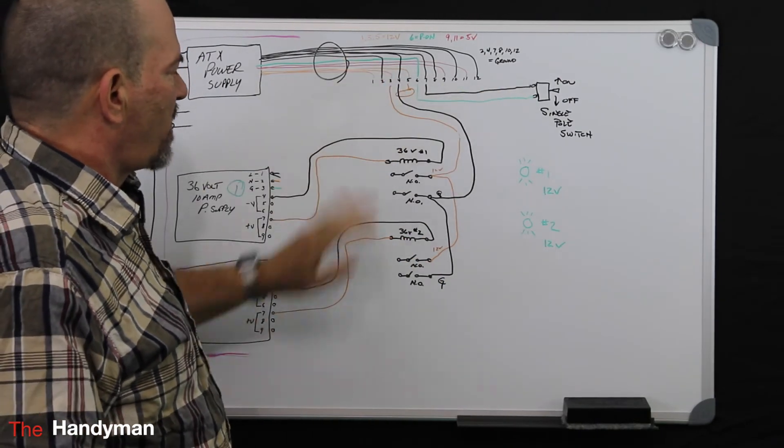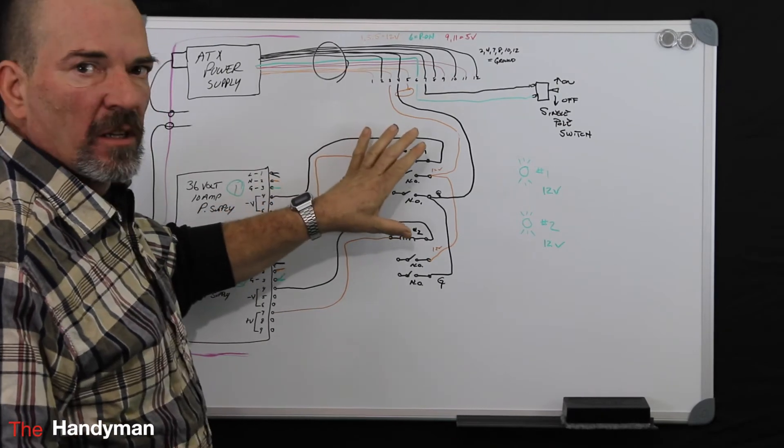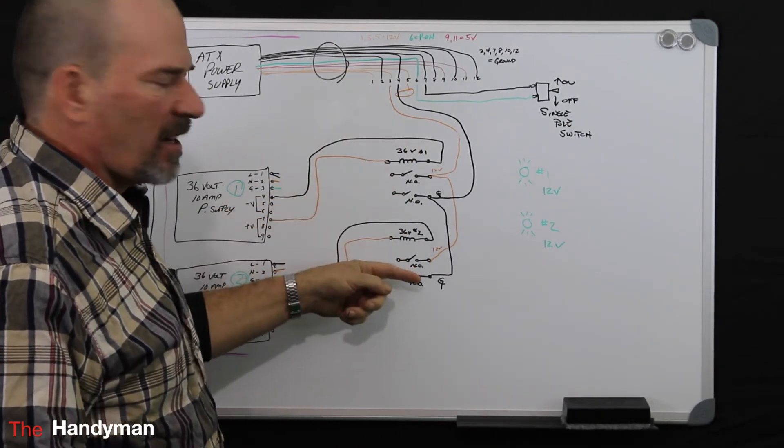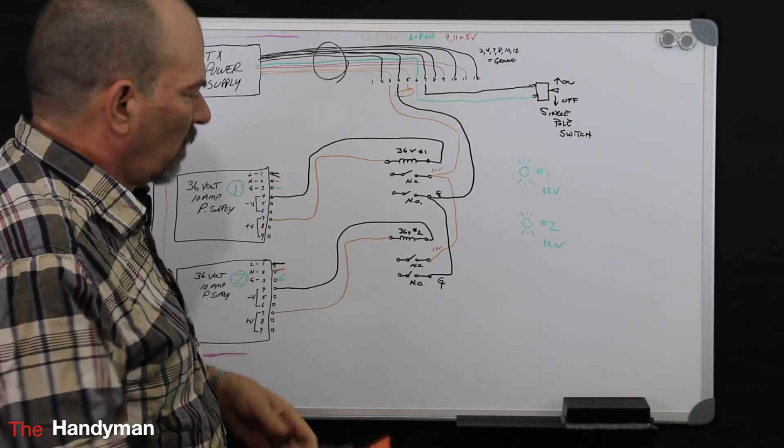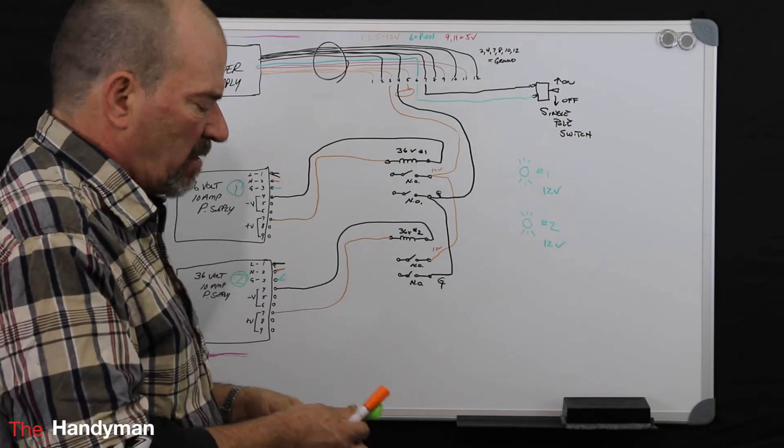Once you turn this system on, this powers up, sends the 36 volts out, closes the coils, which close your contacts. So all you have to do now is come out the other side and power up your lights.